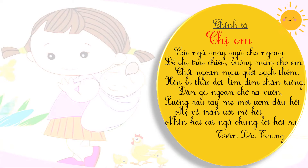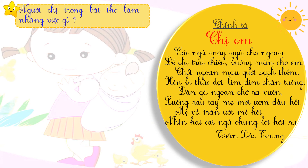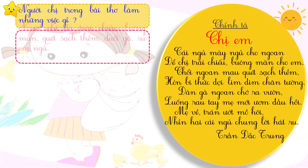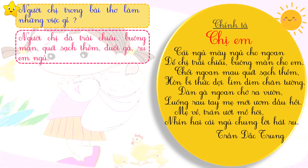Bây giờ, chúng ta sẽ cùng tìm hiểu về nội dung bài chính tả này. Các em hãy cho cô biết người chị trong bài thơ này làm những việc gì? Người chị đã trải chiếu, buông màn, quét sạch thềm, đuổi gà, ru em ngủ.